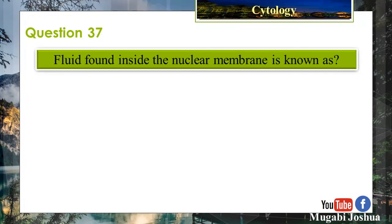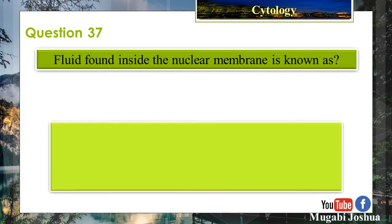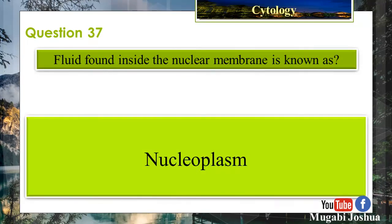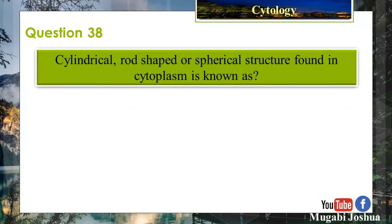Question 37: The fluid found inside the nuclear membrane is known as nucleoplasm. Question 38: A cylindrical, rod-shaped, or spherical structure found in the cytoplasm — what is it known as?